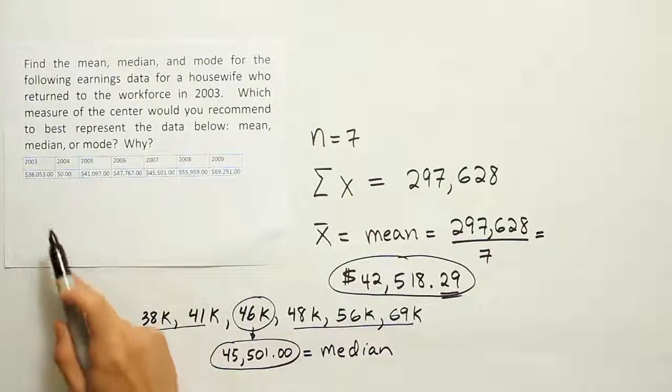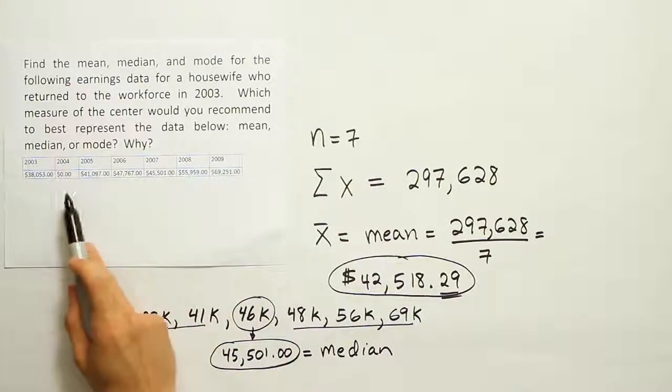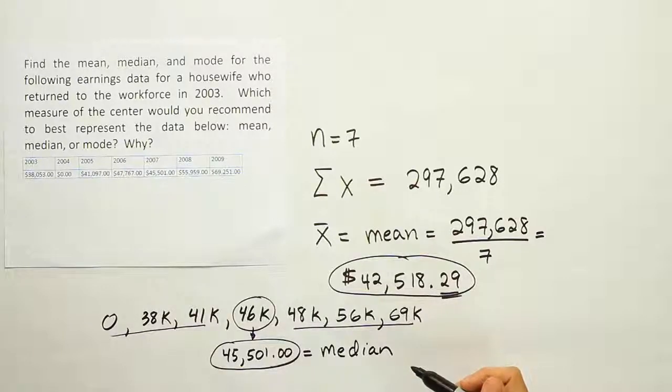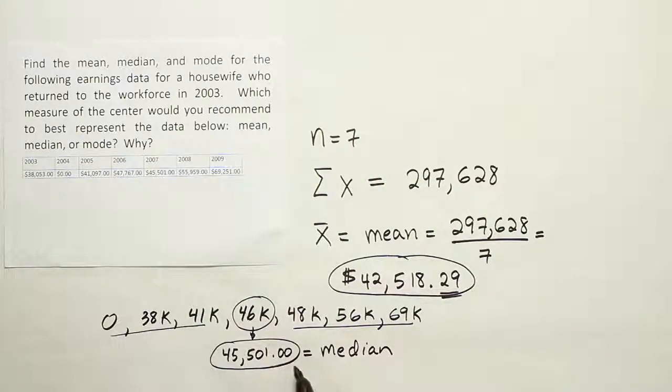As far as the mode, the last measure mentioned here, there really is no mode. None of these numbers are repeated - they're all unique. The mode is the most repeated value present, and there is no number that's most repeated. So we can say there's no mode for this data set. I would recommend the median as a choice.